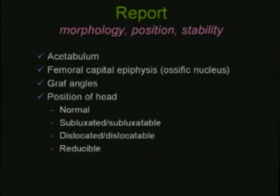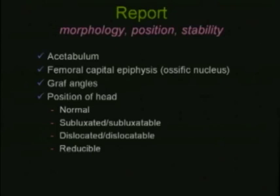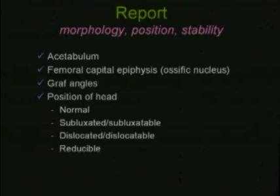The report generated should discuss the morphology, position, and stability of the hip. We describe the acetabulum — whether round or steep — and the femoral capital epiphysis and ossific nucleus, determining whether it is round. We measure the Graf angles, describe the position of the head as normal, subluxated, or subluxatable during the Barlow, dislocated or dislocatable during the Barlow, and whether it is reducible with the Ortolani maneuver.